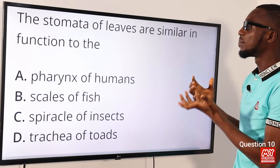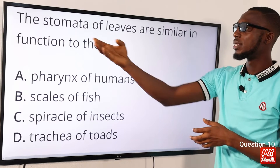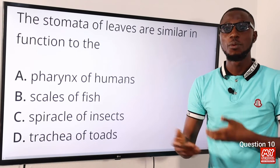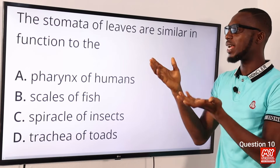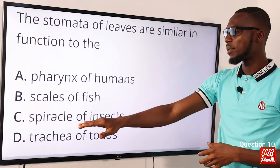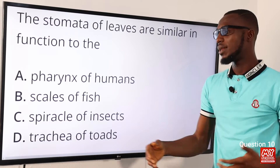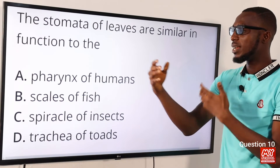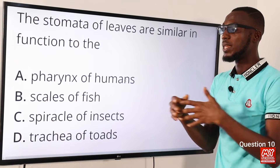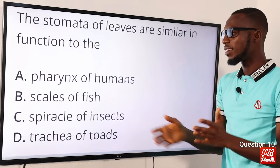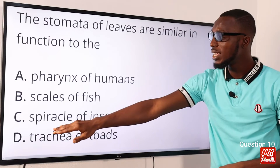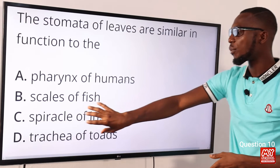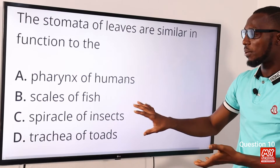Question ten: the stomata of leaves are similar in function to what? The opening and closing of stomata is responsible for the exchange or movement of gases in plant leaves. This is very similar to the spiracle of insects, found alongside the body — the thoracic cavity, abdominal side — which opens to the trachea. So the correct option is option C: stomata of leaves is similar in function to the spiracle of insects.